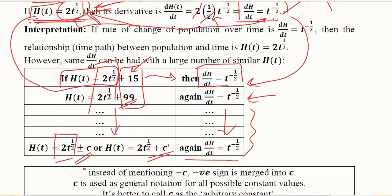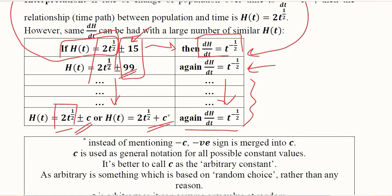That includes both positive and negative possibilities of the constant. So now we have this derivative with respect to time, and it is the same no matter which of the constants we use. Instead of mentioning minus c separately, a negative sign is merged into c just as we did before. c is used as a general notation for all possible constant values.